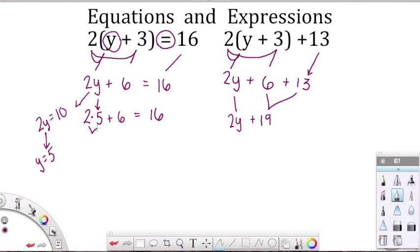2 times 5 is 10, plus 6, yeah, that is 16. And if there's any doubt or there's any skeptics out there, let's go back to our original equation and let's plug 5 in there. So we have 2 times the sum of 5, plus 3, is equal to 16.